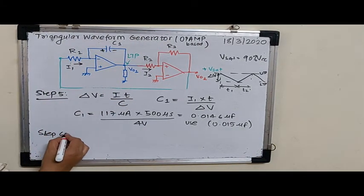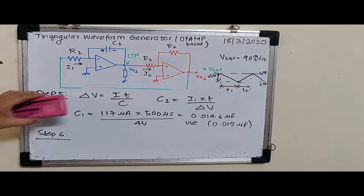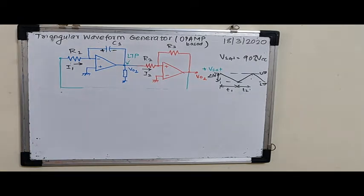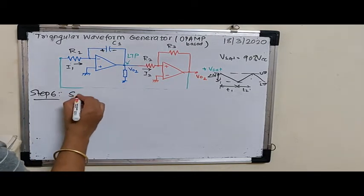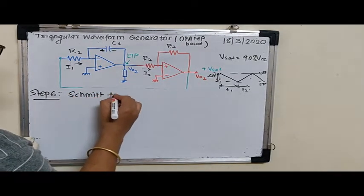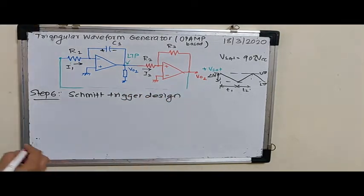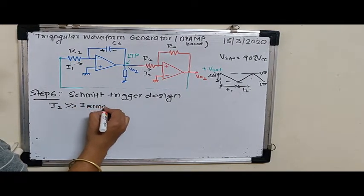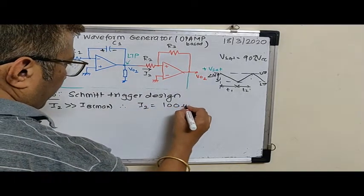This starts with the Schmitt Trigger design. We will start with a fresh page here. Step 6, this is the Schmitt Trigger design. Again here we have I2. So we have to select I2 far more greater than IB max. Therefore I2 happens to be, let us say again, 100 microampere. 1000 into 100 nanoampere, that gives me 100 microampere.